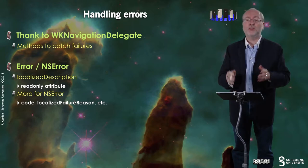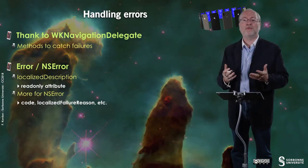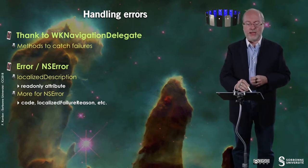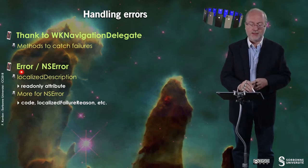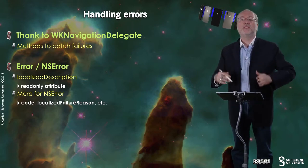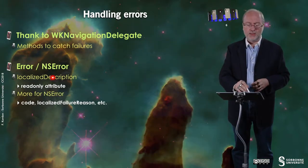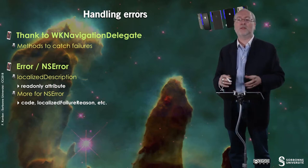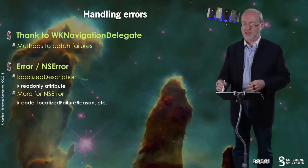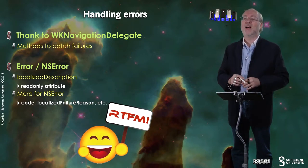How do you handle errors? There is a dedicated method in the WKNavigationDelegate protocol that allows you to catch failures. In this method, you get an error — an NSError in Objective-C — that contains a localizedDescription attribute, giving you a textual explanation of the error. For NSError, you also have the error code, a localized failure reason, and more attributes.